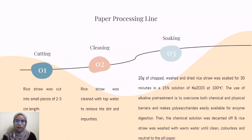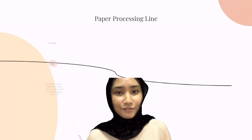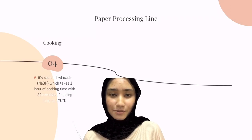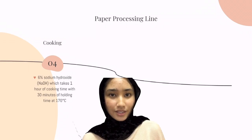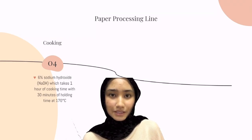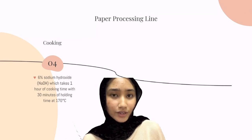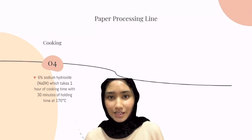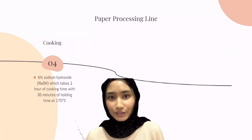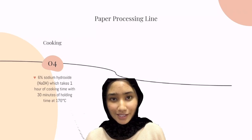The use of alkaline treatment, which is sodium carbonate, is to overcome both chemical and physical barriers and makes polysaccharides easily available for enzyme digestion. The chemical solution was decanted off and rice straw was washed with warm water until clean, colourless, and neutral to pH paper. After the removal of silica from the rice straw, it is cooked with 6% concentration of sodium hydroxide, which takes 1 hour of cooking time and 30 minutes of cooling time at 170 degrees Celsius using a digester. This 6% concentration of sodium hydroxide results in good quality paper, giving 46% brightness.